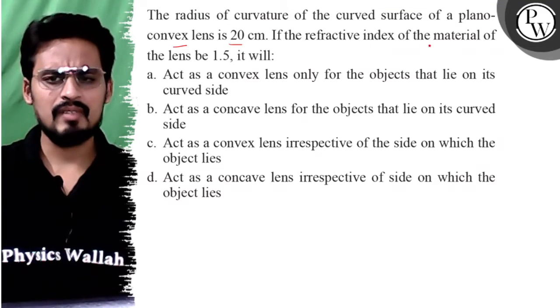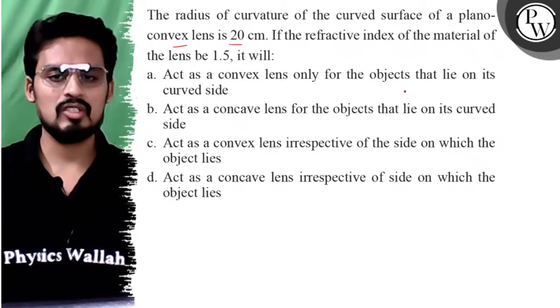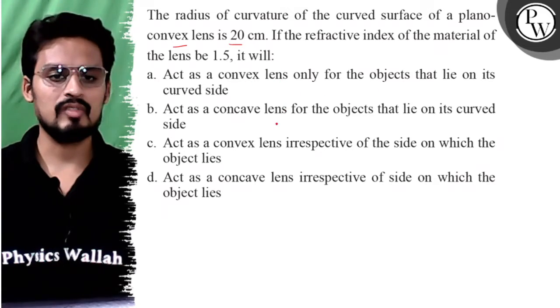If the refractive index of the material of the lens is 1.5, it will act as a convex lens only for the objects that lie on the curved side.